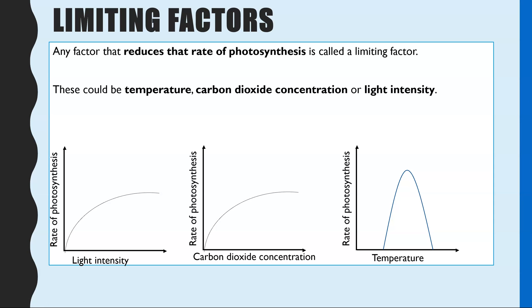The last thing you need to know in photosynthesis is the idea of limiting factors. A limiting factor is anything that could reduce the rate of photosynthesis, and here you need to apply your knowledge of the light dependent and independent reactions to understand why temperature, carbon dioxide concentration, and light intensity can limit the rate. Temperature affects the light independent reactions because it is an enzyme-controlled reaction — if it's too cold there's not enough kinetic energy, and if it's too hot the enzymes denature.